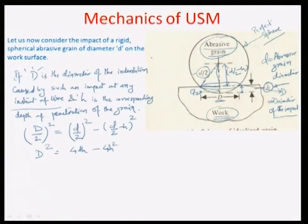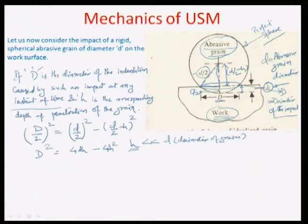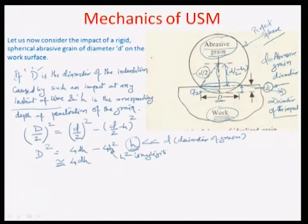In USM, the grain penetration depth h is very small compared to the grain diameter d — grain diameters are typically about 20 to 25 microns while h varies between 1 and 5 microns. Therefore, the h² term can be neglected, and the equation approximates to D² ≈ 4dh. This gives a relationship: D ≈ 2√(d · h), where d is the grain diameter and h is the penetration depth.